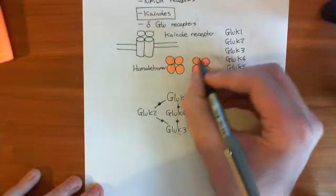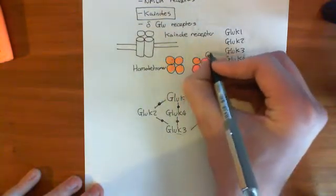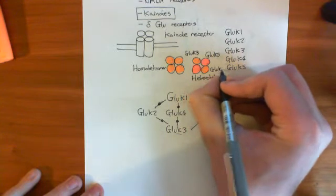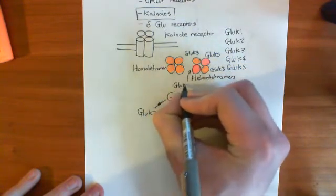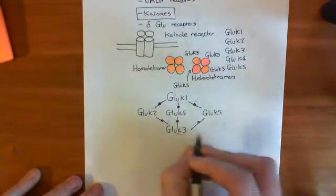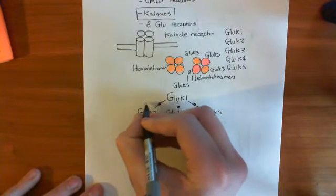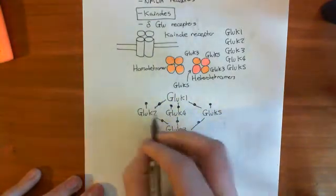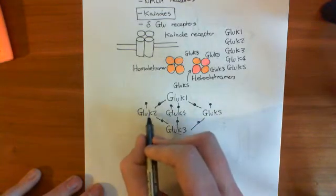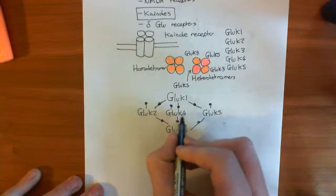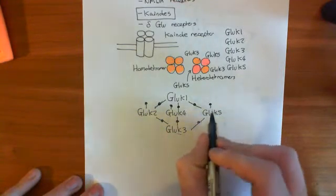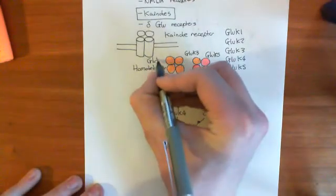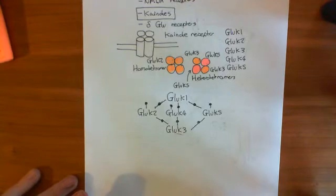An example: you can have GluK5 with GluK3 — the pink ones are GluK5s and the orange ones are GluK3s. To show the allowed homotetramers on this diagram, put lines up from certain nodes, keeping the diagram symmetrical. The allowed homotetramers are GluK2, GluK4, and GluK5, but not GluK1 or GluK3. So you are allowed to form a homotetramer of GluK2s, for instance.